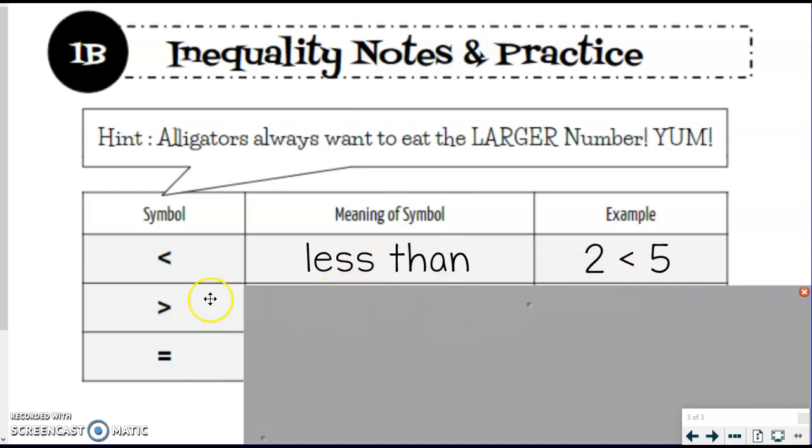But if you look at that symbol individually, when you read it left to right, that smaller side, or the non-mouth part is coming first. So it's less than, and the mouth is facing away.